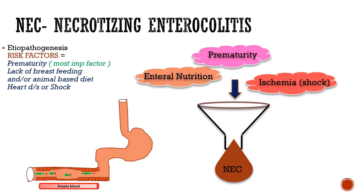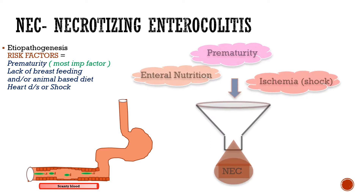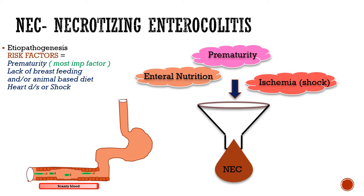The etiopathogenesis and risk factors include prematurity, which is the most important risk factor, lack of breastfeeding and/or animal-based diet, and heart disease or shock. Prematurity is the most important risk factor because a premature gut is one in which the mucosa isn't developed well.